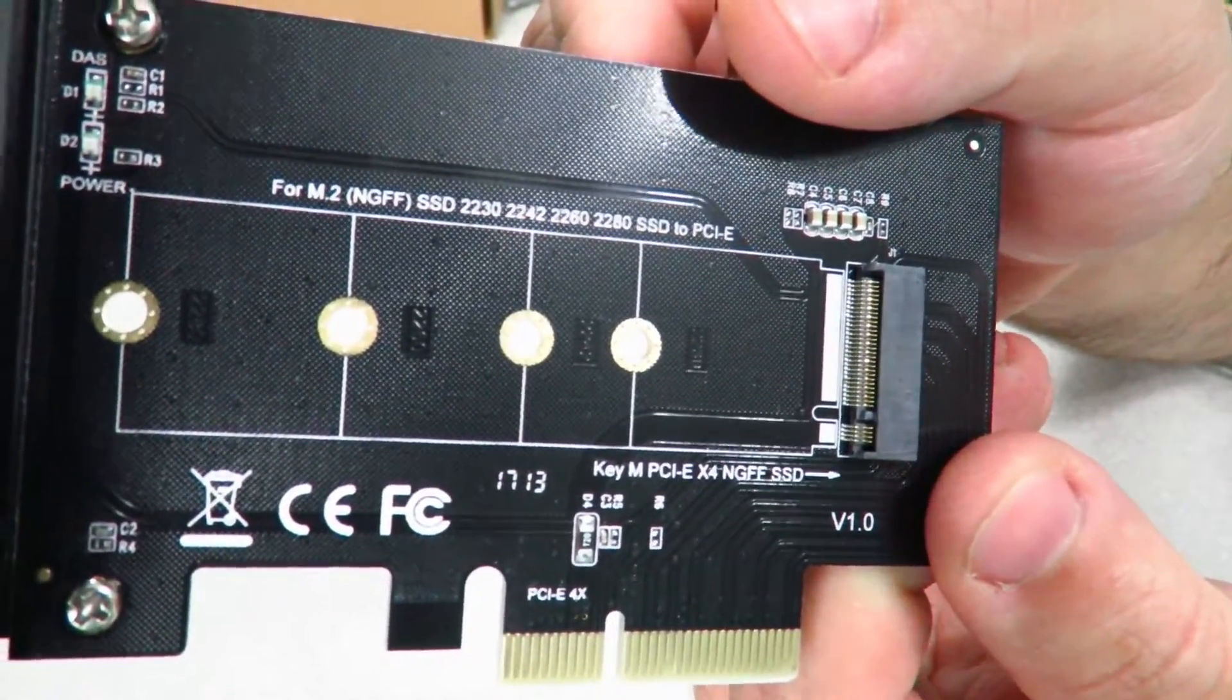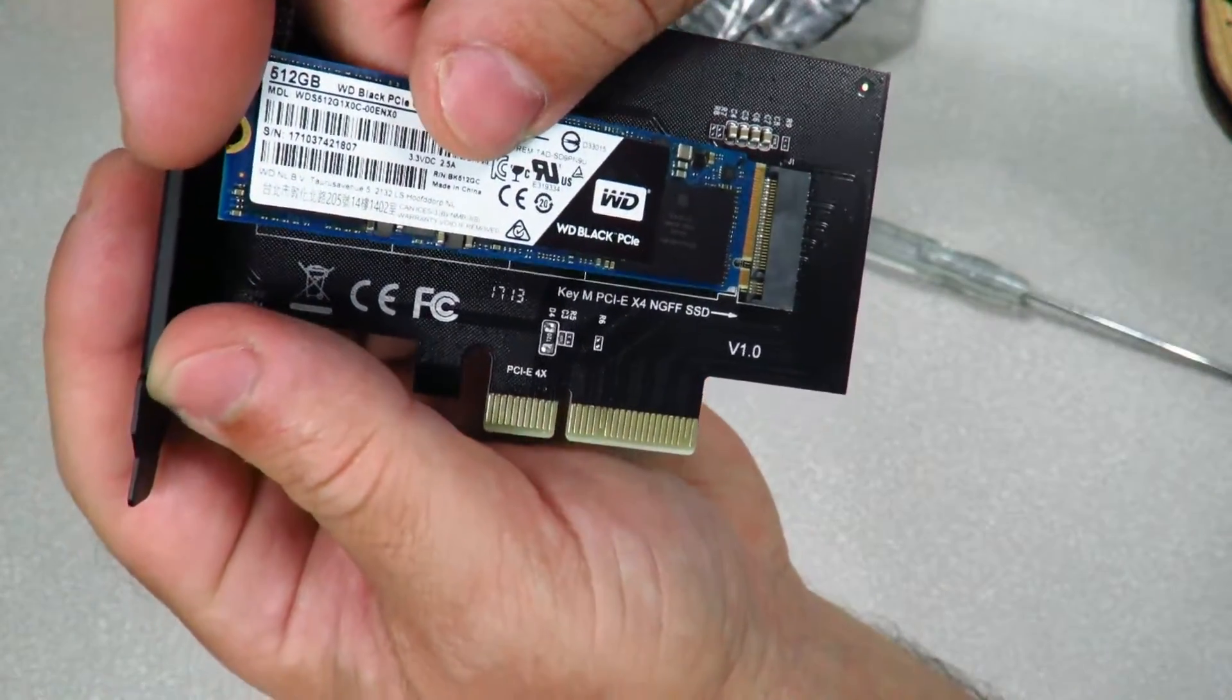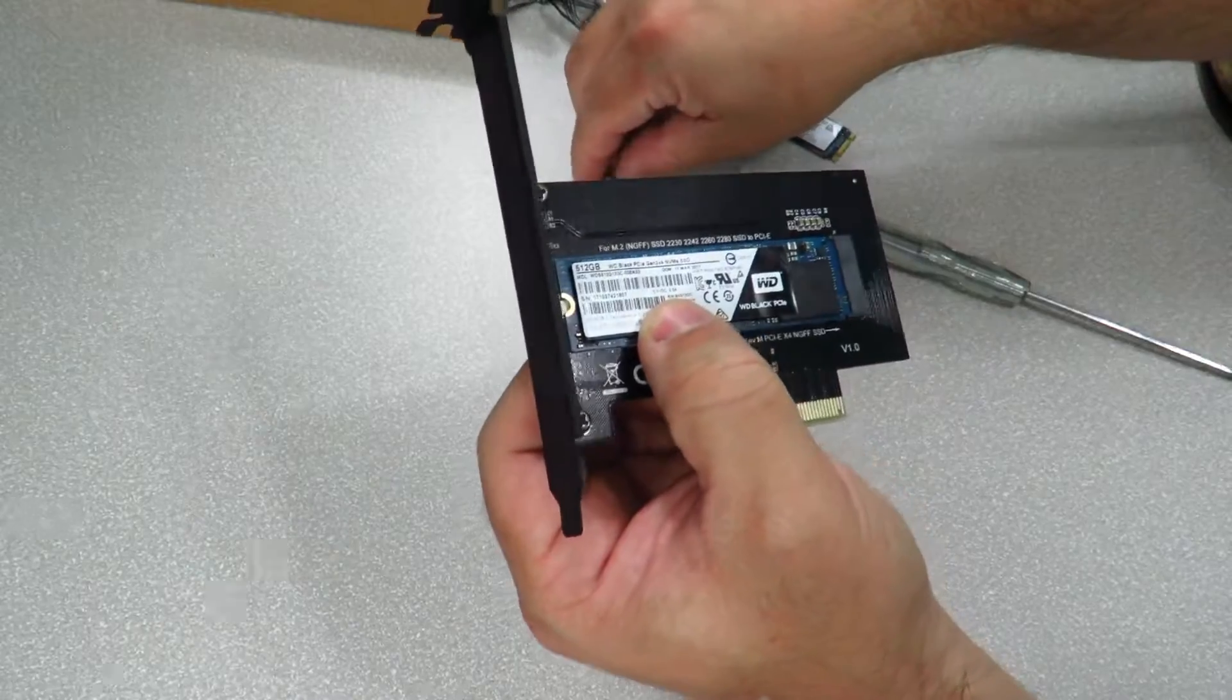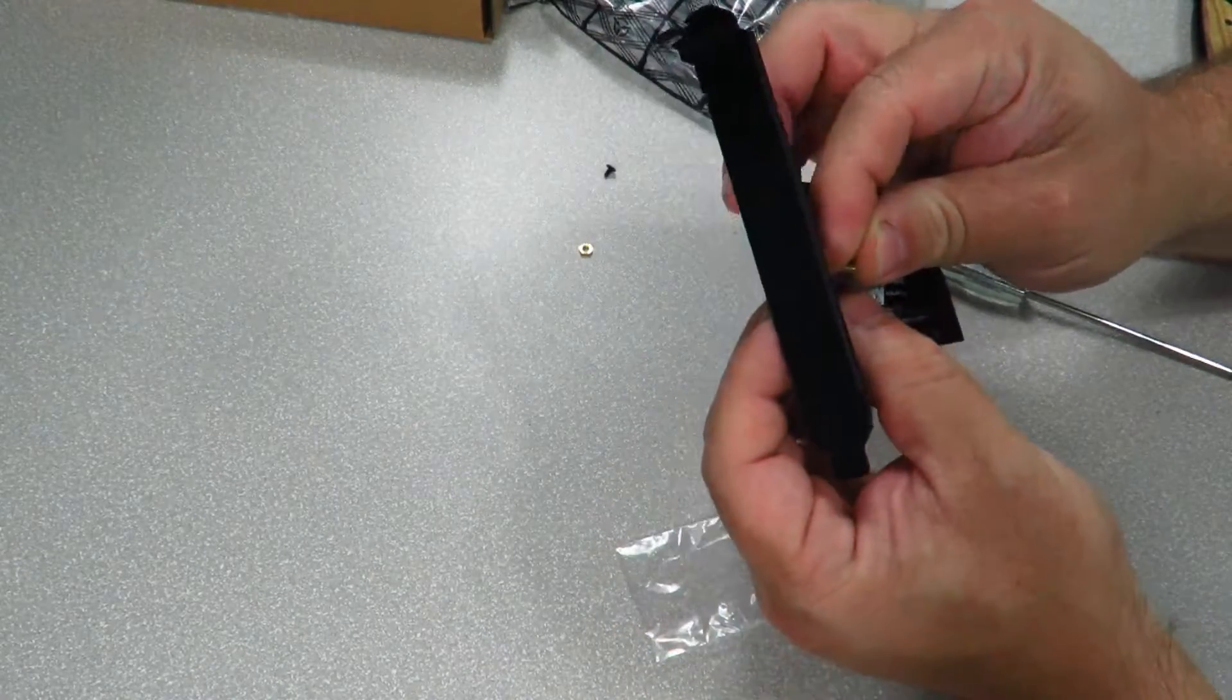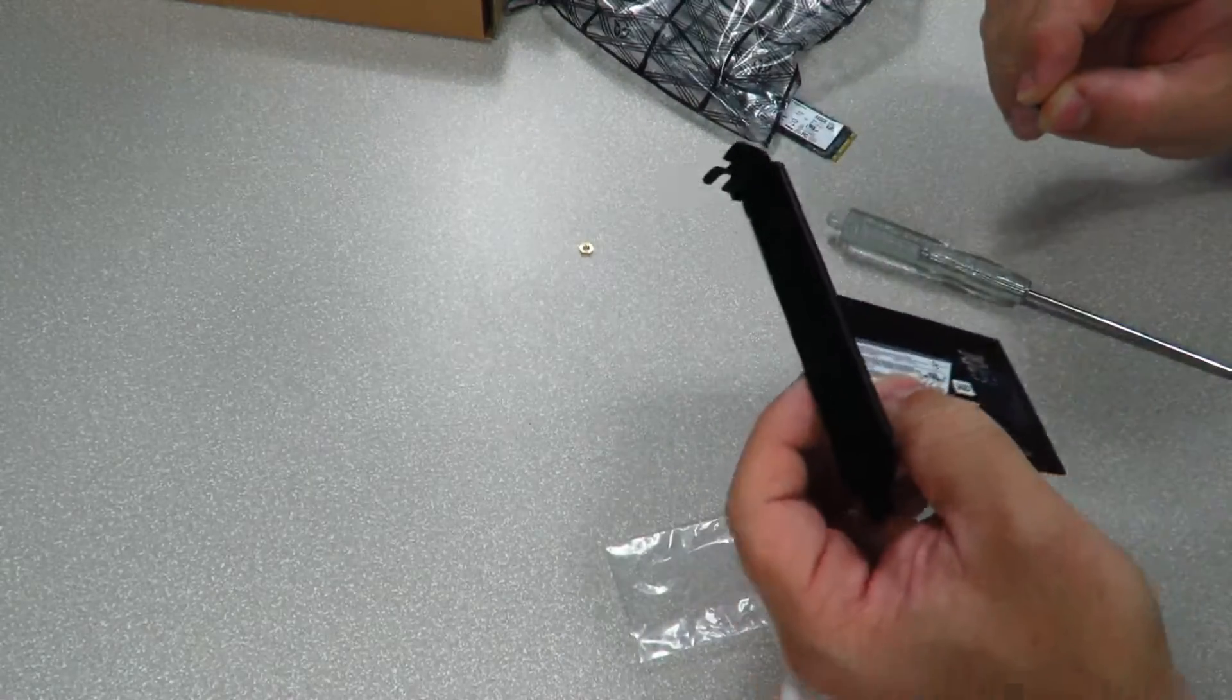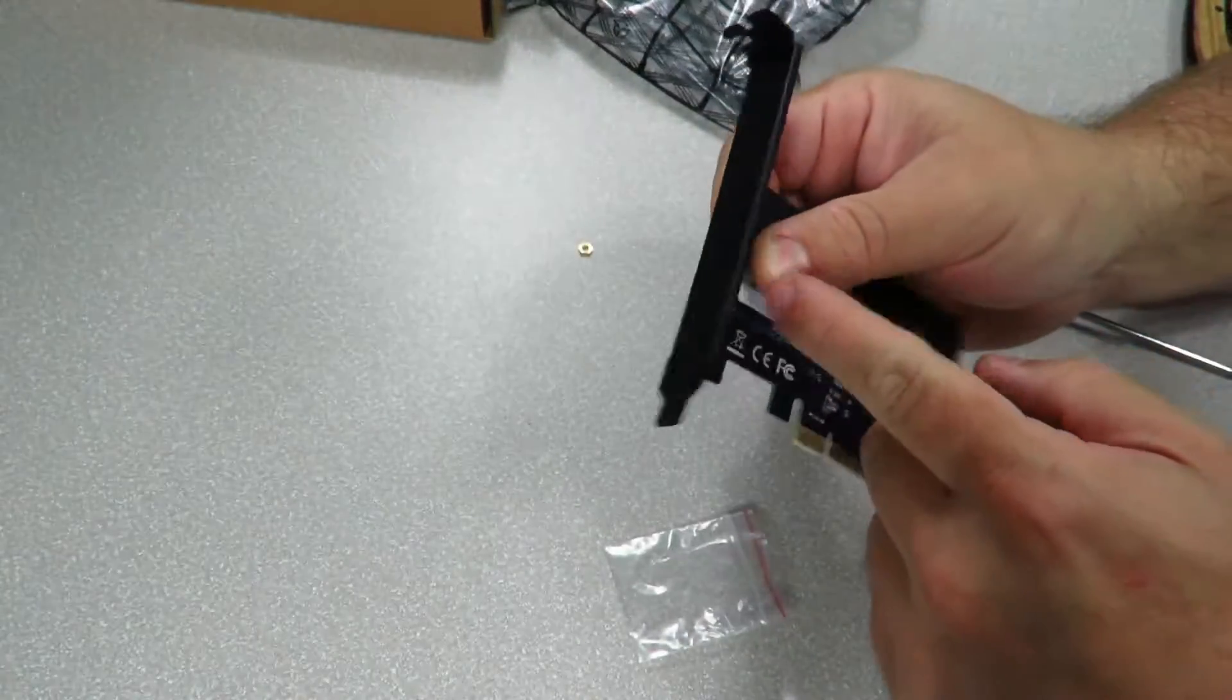It says right here M.2 NGFF SSD 2230 and it goes through all the form factors to PCIe. As an example to show you guys how to install it: just slide it right down here, push it in just a little bit, and then we're going to screw that screw in right over here. I'm going to use the gold one - I believe it is the gold one. Is it the gold one? I think it might be the black one.